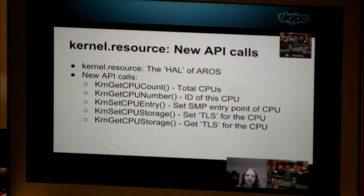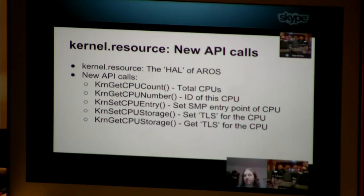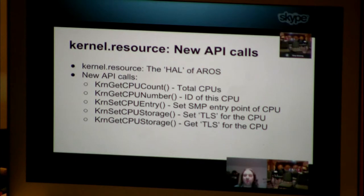AROS differs from the other AmigaOS family OSes in that we have an underlying HAL hardware abstraction layer called kernel.resource. We had to implement five new APIs in kernel.resource to handle the basic concepts of SMP: getCPUCount, which gets the total number of CPUs from the underlying hardware; getCurrentCPU, a unique identifier for this CPU; an entry point that sets intervals for where we get the first task; and setCPUStorage and getCPUStorage, where we can have a per-CPU pointer pointing to the scheduling information for that specific CPU.